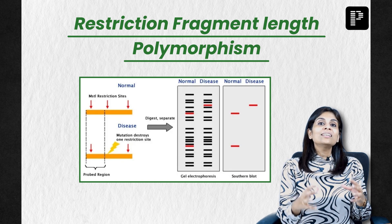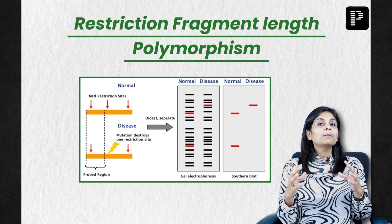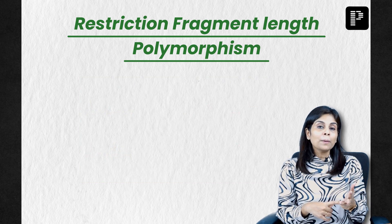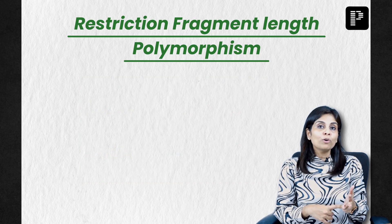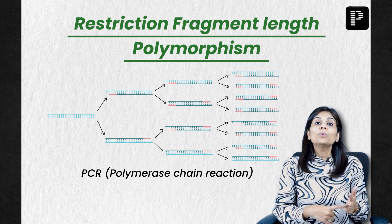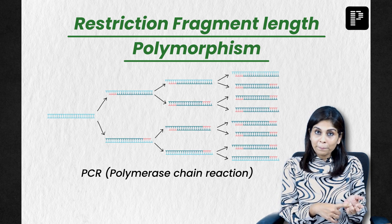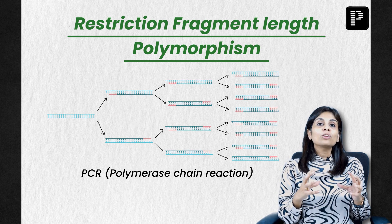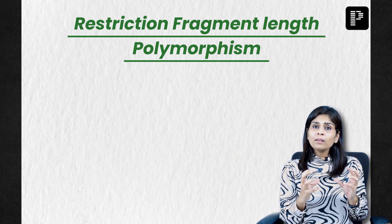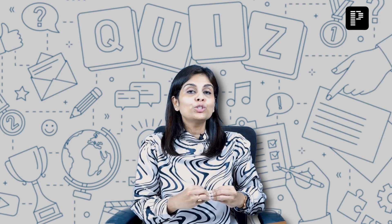Known mutation sites can be diagnosed using restriction fragment length polymorphism following PCR. It can also be used for person identification based on the fact that the number of restriction sites present in an individual is variable.